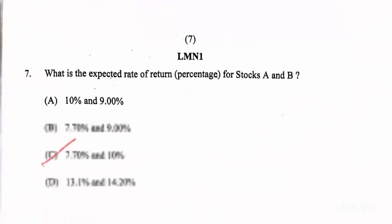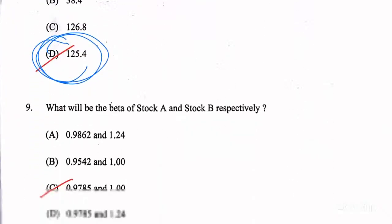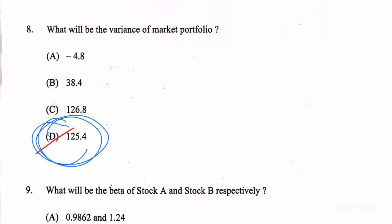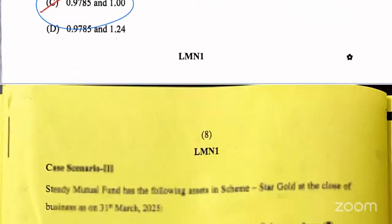Then coming to the next question, which is expected rate of return — the numbers are 7.7 and 10. So for computing question six, you basically have to compute question seven first. And the variance of the market is actually the first thing you compute before anything else — that is question number eight. Then what would be the beta? The answer is C again. When you compute the market variance, you'll get the beta, so question nine follows question eight. The answer is C.